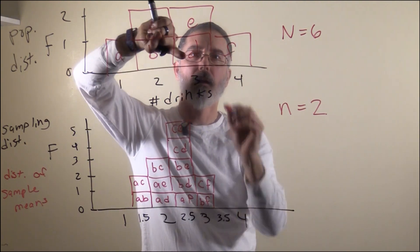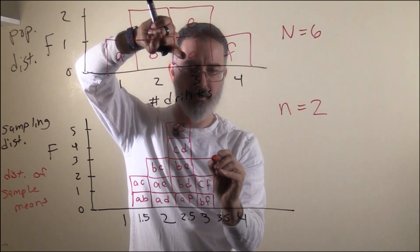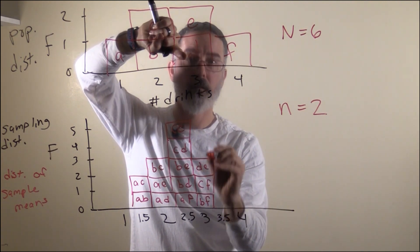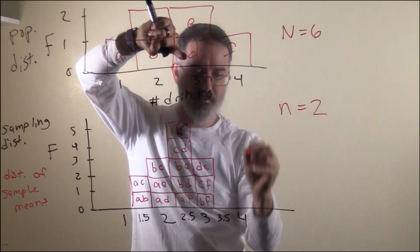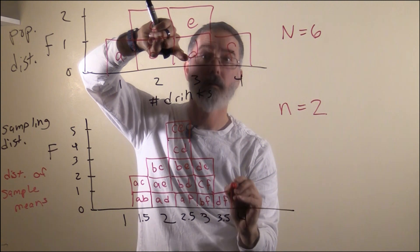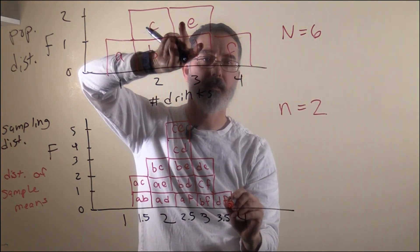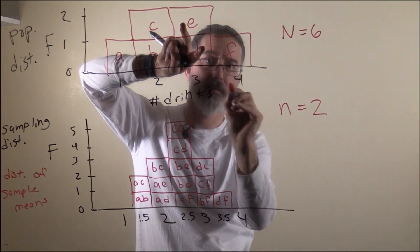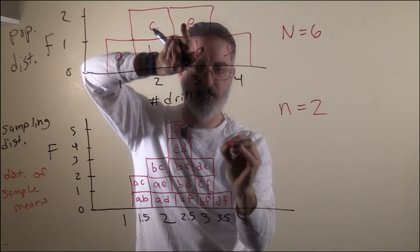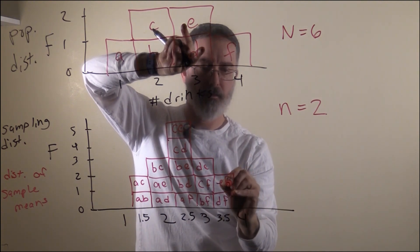Now we look at D. D and E — scores of 3 and 3 — averages 3. D and F averages 3.5. That is it for D. E only has one remaining combination, which is F. Their scores are 3 and 4, so the average of those two is 3.5 — that is E and F.